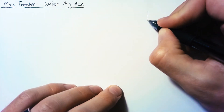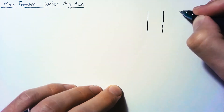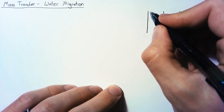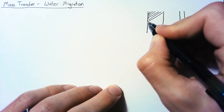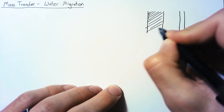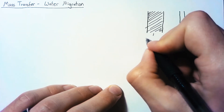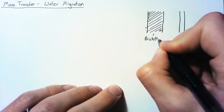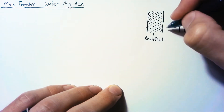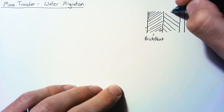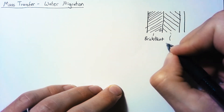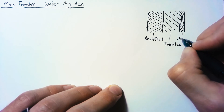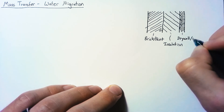To start off, let's define the structure we're looking at. We're going to be investigating a building that has three parts to its wall. The first part is going to be composed of brick with a thin layer of paint, the second part is insulation, and the third part is drywall and interior paint.